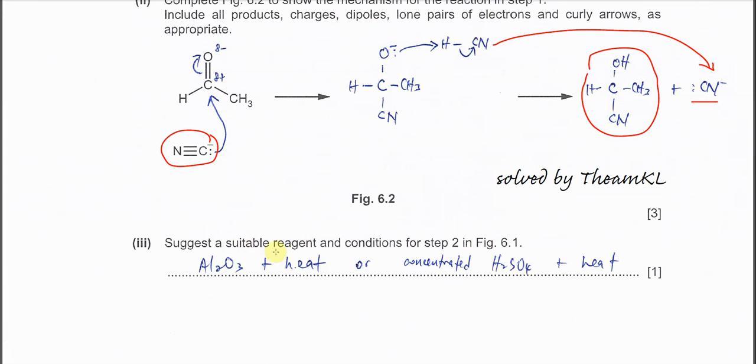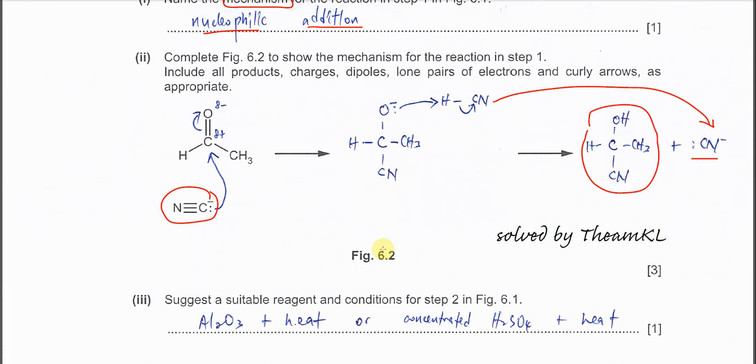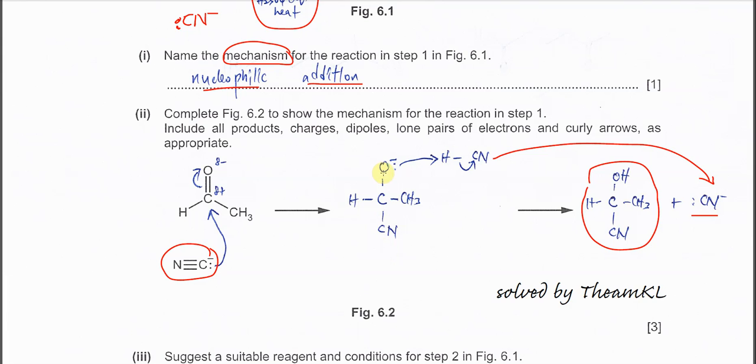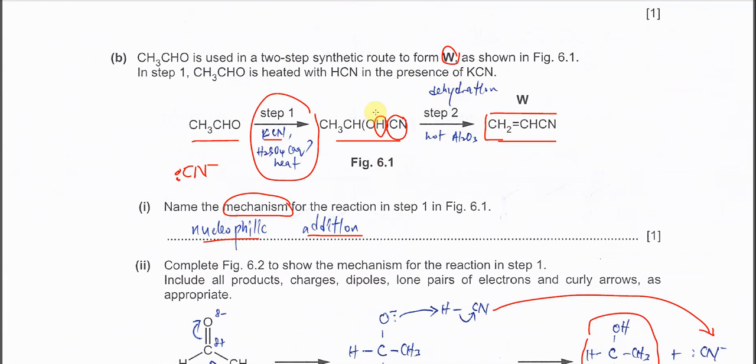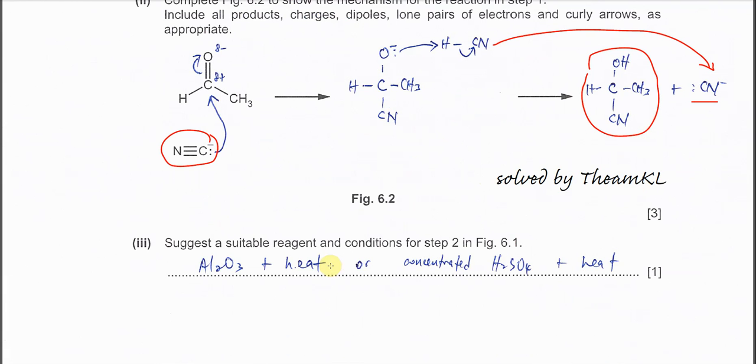Part (iii): Suggest a suitable reagent and conditions for step 2. Step 2 is the dehydration from alcohol to the double bond. You can use either hot alumina—Al2O3 with heat—so the dehydration will happen, or concentrated H2SO4 with heat as well. These two work if you let the alcohol undergo dehydration.